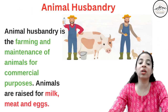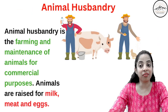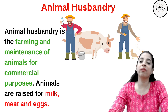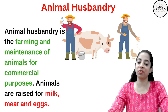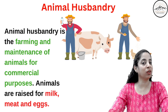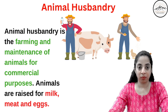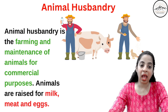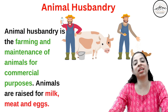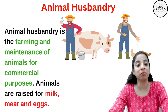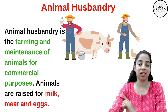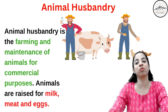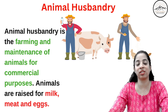Many students say they don't get marks when they write the definition. If you just write 'taking care of animals is known as animal husbandry' — no. It is the farming and maintenance of animals on farms for commercial purposes. The definition has to have those keywords, my dear students.